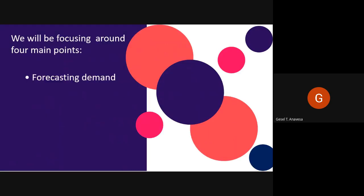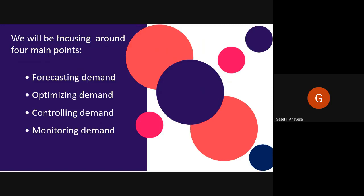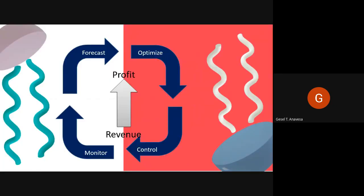First, forecasting demand. Second, optimizing demand. Third, controlling demand. And lastly, monitoring demand. These four components can be put together to form a revenue management cycle. We will examine each component part of the cycle in the following sections to see how they interact and how the cycle can be used to provide revenue management guidelines leading to improved performance.